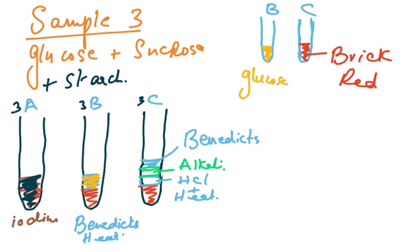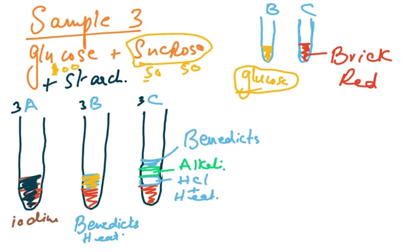Test tube 3C is the important one. It contains both glucose and sucrose. HCl is added to hydrolyze the sucrose — a disaccharide — into glucose and fructose. So if you originally had 100 units of glucose, after hydrolysis you now also have approximately 50 glucose and 50 fructose from the sucrose, giving you nearly 200 units of reducing sugar total.